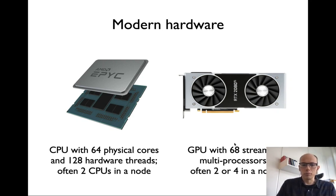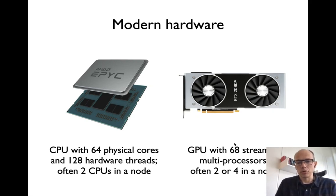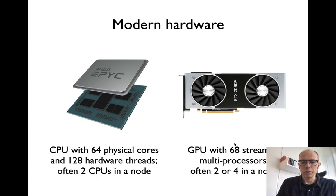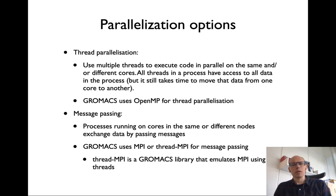On top of this, you could have multiple nodes connected together over a network, like a supercomputer for instance. The question is: how do I run GROMACS efficiently on such hardware? To understand the different options, we first need to discuss how GROMACS actually parallelizes.